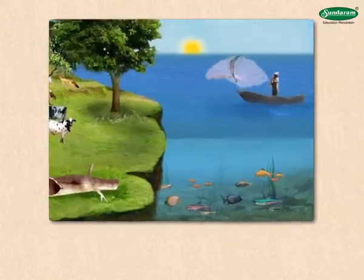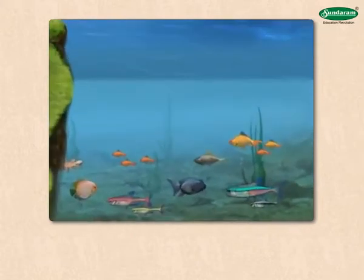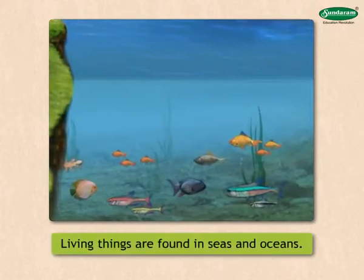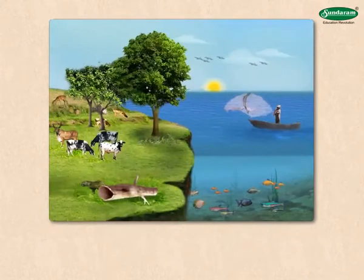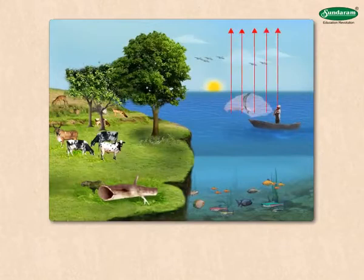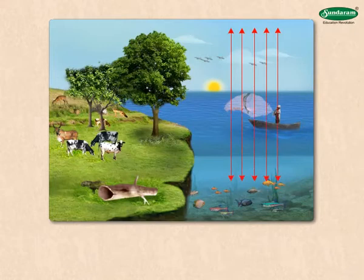Living things can thrive to some depth below the earth's surface too. In almost all parts of the seas and oceans, we can find living things in large or small numbers. There they find favourable temperatures and enough food supply. The biosphere extends from some height in the atmosphere to some depth into the ground and water. However, there are more living things close to the surface of the earth.